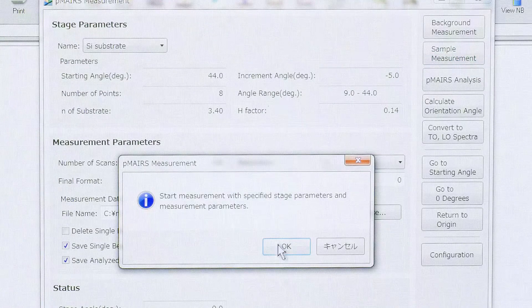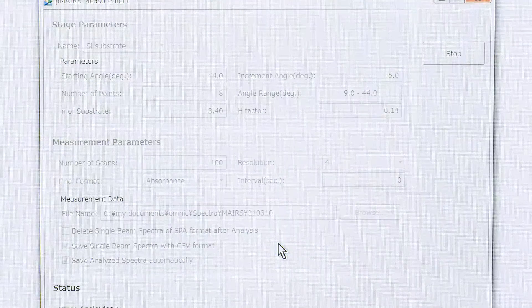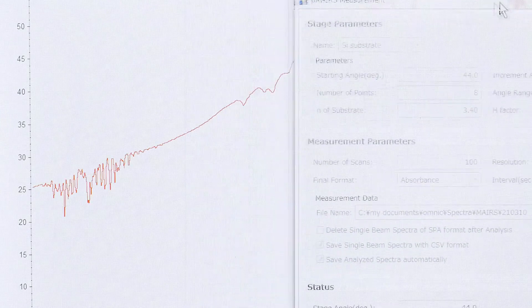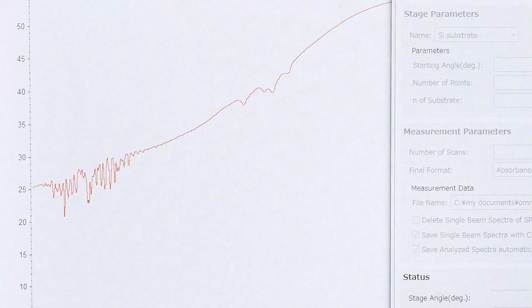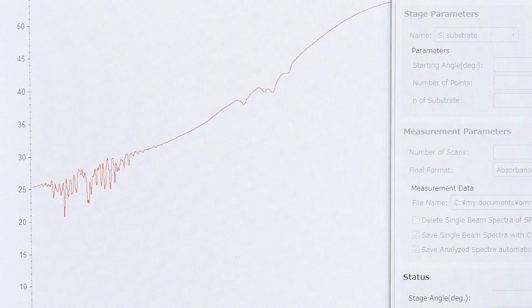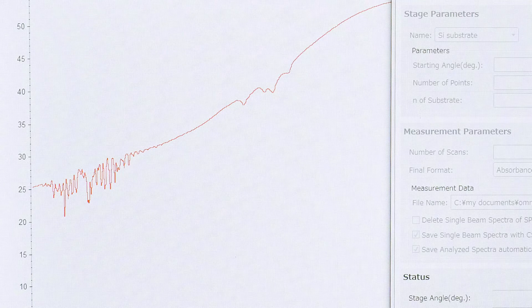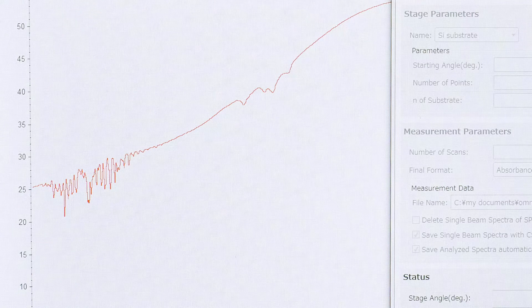After spending some time for the air purge, the sample measurements are started by pressing this button. The collection of single beam spectra at the optimal angles is performed automatically and the spectra necessary are also saved automatically. Then the same process is repeated for the background measurements.